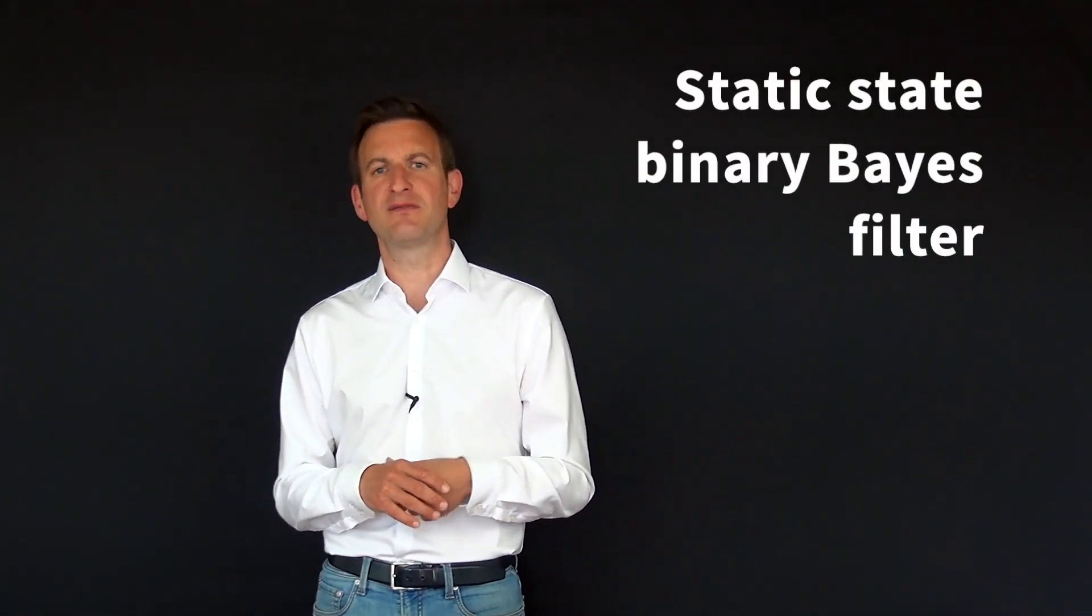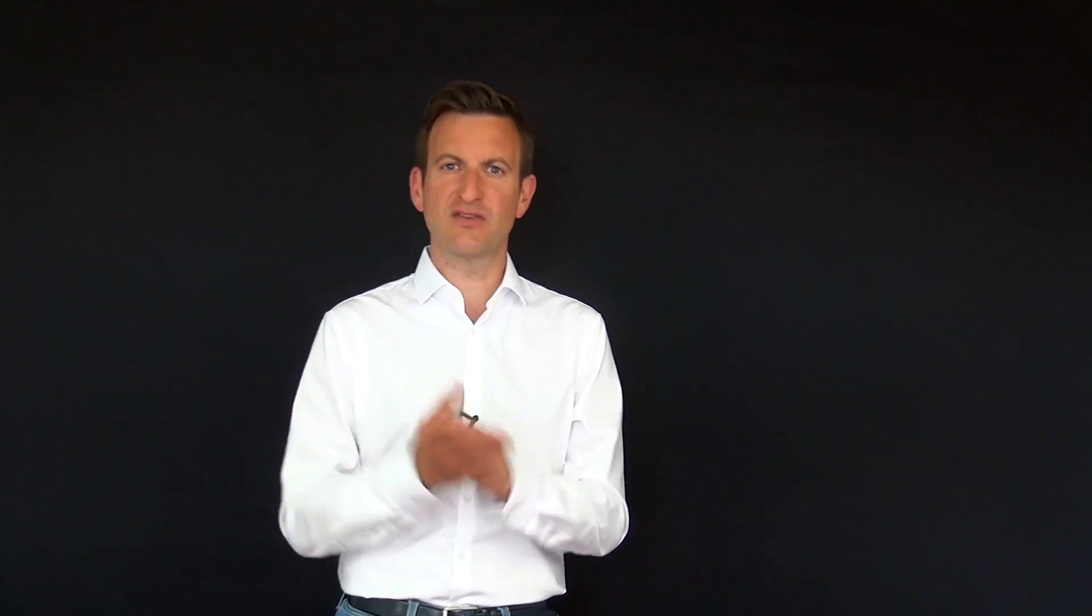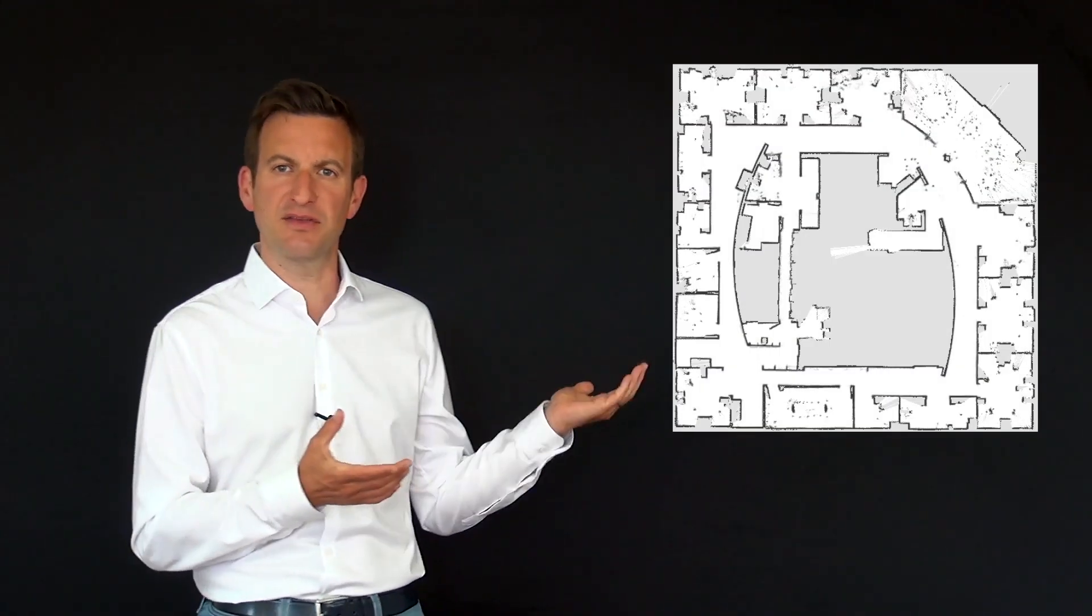And mathematically speaking, we are using a static state binary Bayes filter to estimate a probability distribution for every place. If you have a high quality sensor which can measure distances very well, you typically get very sharp maps in the environment, like this one over here.